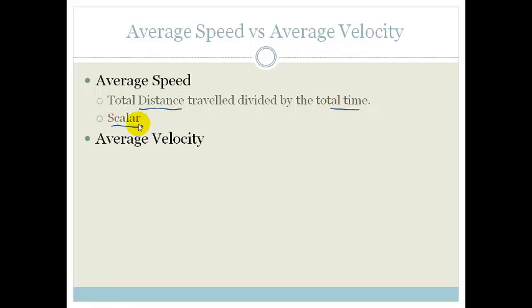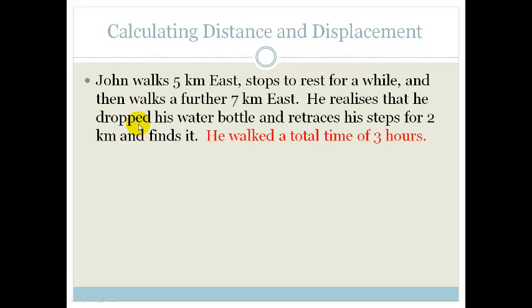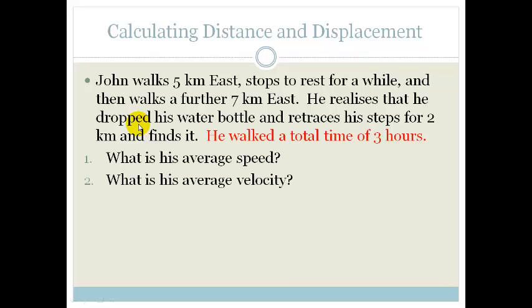Right. Whereas, average velocity is the total displacement traveled, divided by the time, and therefore, it is a vector. So, let's look at this example again. Now, we're telling you that he travels, walks the same thing, but we give it the time. He says he walked a total time of 3 hours. So, they ask what is his average speed and what is his average velocity.